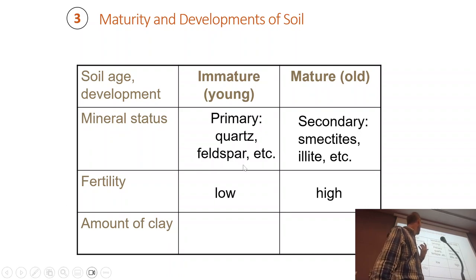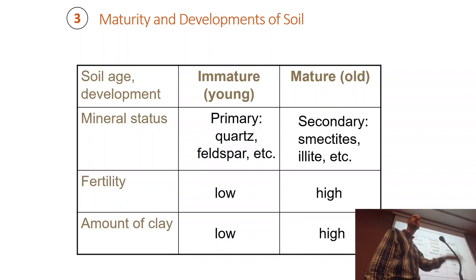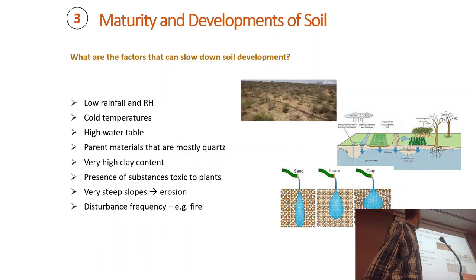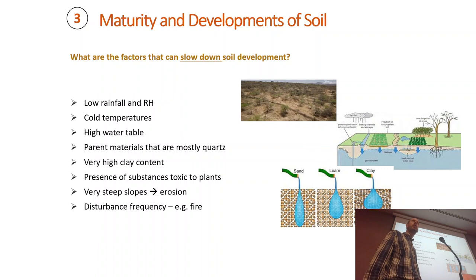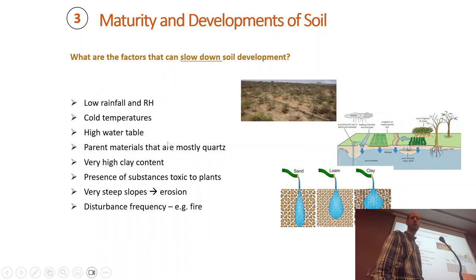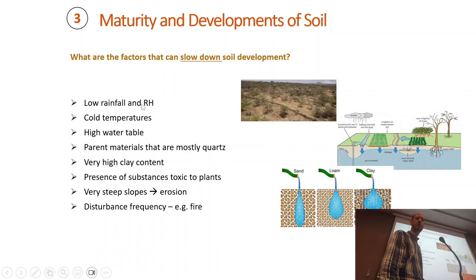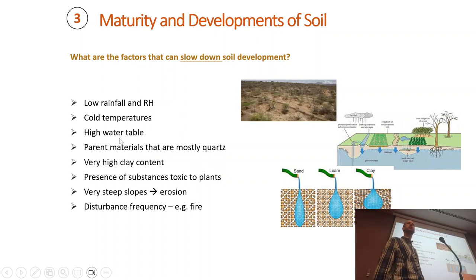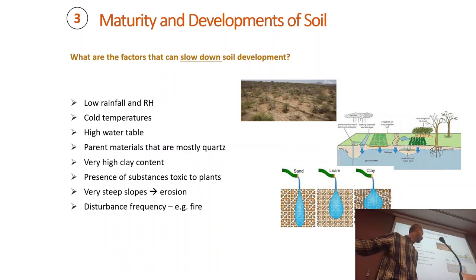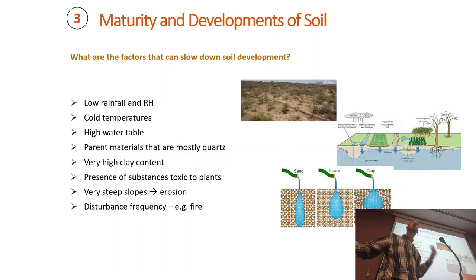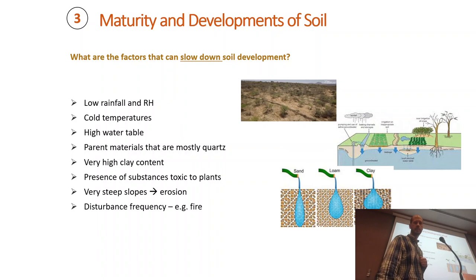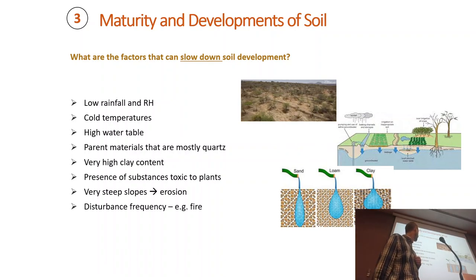Clays go from low in young soils to high in mature soils, because clays are mostly secondary minerals that need time to transform from primary minerals. Some factors prevent soils from developing quickly: low rainfall (as in Oman), cold temperatures, high water table causing anoxic conditions — since most chemical reactions and biological processes require aerobic conditions. Parent materials composed mostly of quartz, which are hard to decompose, also lead to slow soil development.